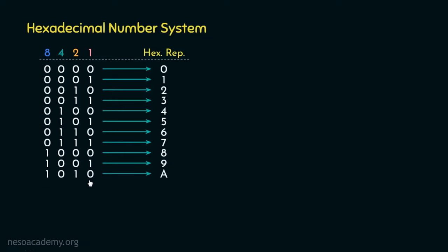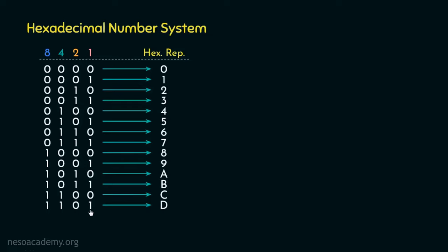1010 is actually 10 in decimal because 8 plus 2 is 10, but in hexadecimal we represent that magnitude using the symbol A. Then 1011 in decimal would be 8 plus 2 plus 1, that is 11, which in hexadecimal is B. 1100 is 12, which in hexadecimal is C. 1101 is 13, which in hexadecimal is D. 1110 is 14, which in hexadecimal is E. And finally, 1111 is 15 because 8 plus 4 is 12, plus 2 is 14, plus 1 is 15, which in hexadecimal is F. So these are all the symbols of the hexadecimal number system.